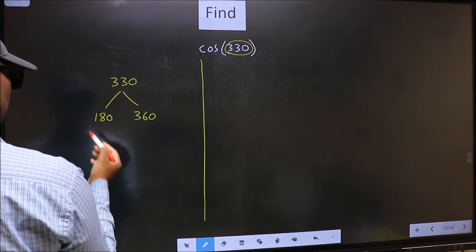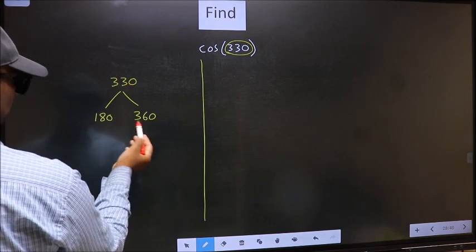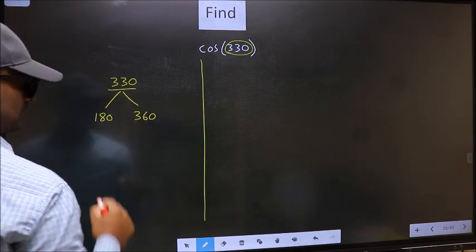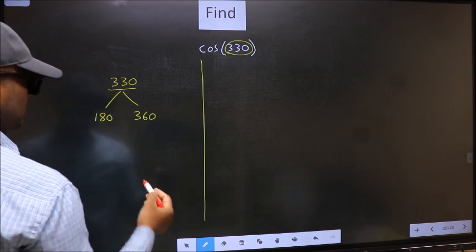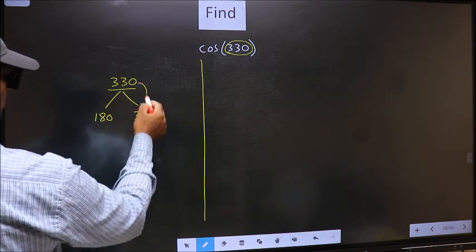This is 180 times 1. This is 180 times 2. Between these two numbers, 330 lies. Next, 330 is close to which number? This is close to 360.